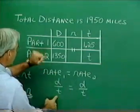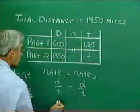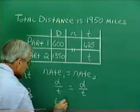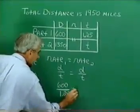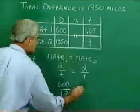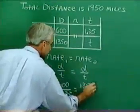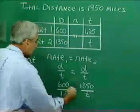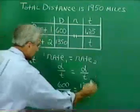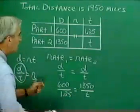All right, for the first part of the trip, we have a distance of 600 and a time of 1.25. And for the second part of the trip, we have a distance of 1,350 and a time of T. And now, since we have a proportion involved, we can cross multiply to clear the fractions. And away we go.